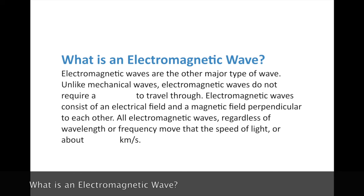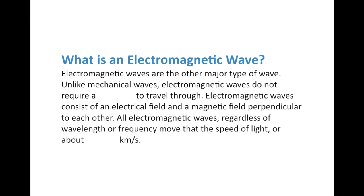Electromagnetic waves are a different type of wave. In our last lesson we talked about mechanical waves, which were waves that require a medium or matter for them to pass through. Electromagnetic waves are different — unlike mechanical waves, they do not require a medium to travel through. In other words, they can travel through a vacuum, through empty space, which is really good for us since our main source of energy is the sun, which is in the vacuum of outer space. Electromagnetic waves consist of an electrical field and a magnetic field that are perpendicular to each other, at 90-degree angles.